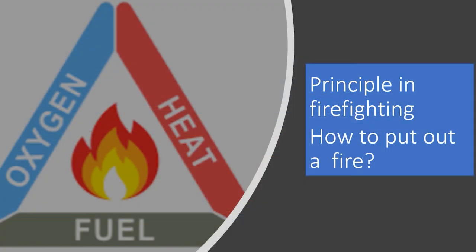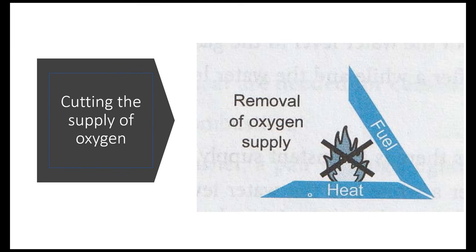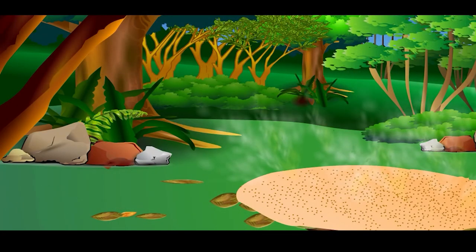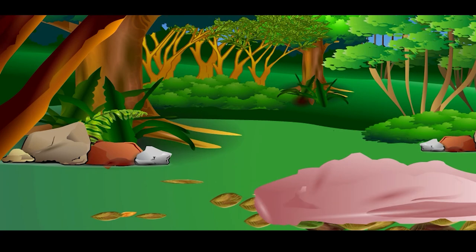The principle of firefighting is to remove one or more of the three conditions required for combustion to occur. One of the ways is to cut the supply of oxygen. Sand and a fire blanket can be used to extinguish the fire — they block off the supply of oxygen. Without oxygen, combustion stops.